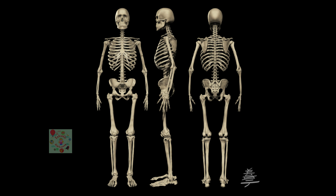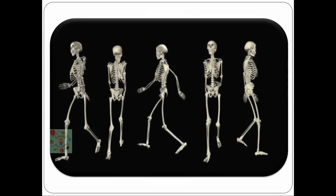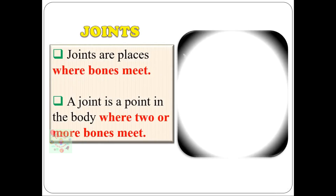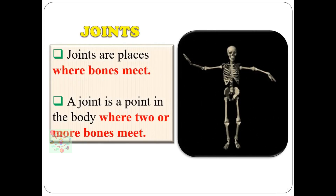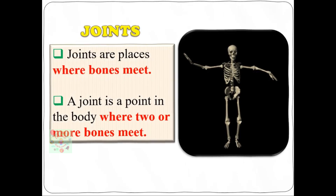So now let's study about joints in detail. Joints are places where bones meet — for example, your elbow and your knee. A joint can also be defined as a point in the body where two or more bones meet.